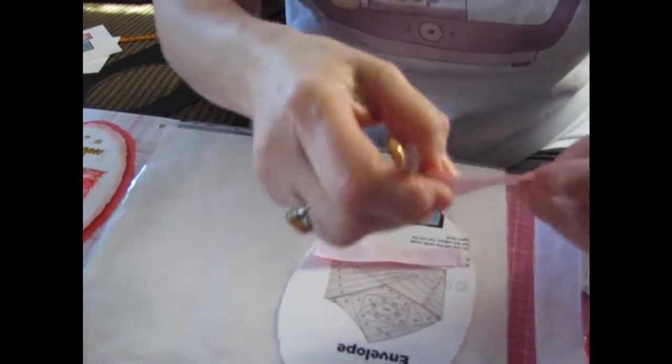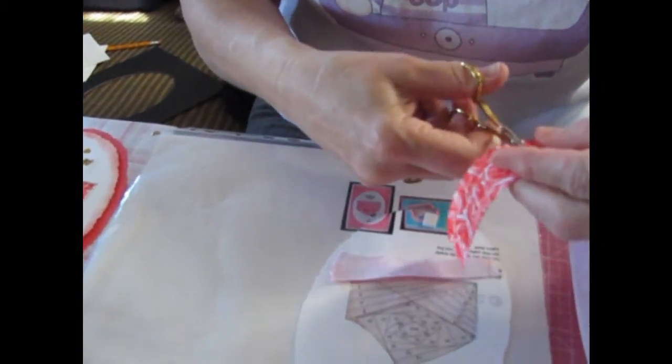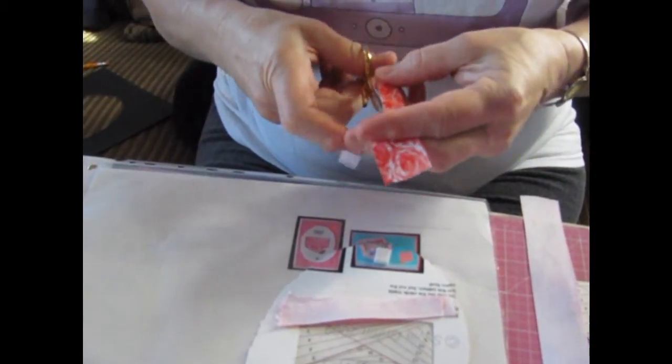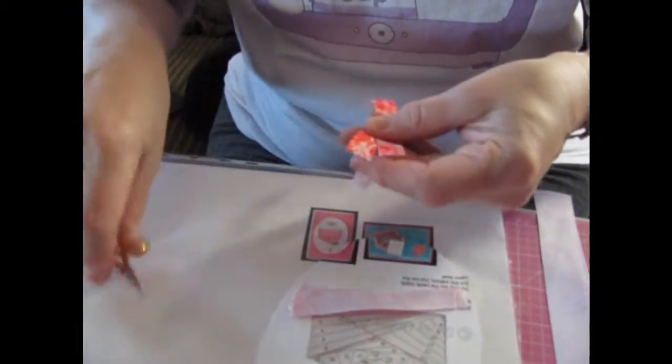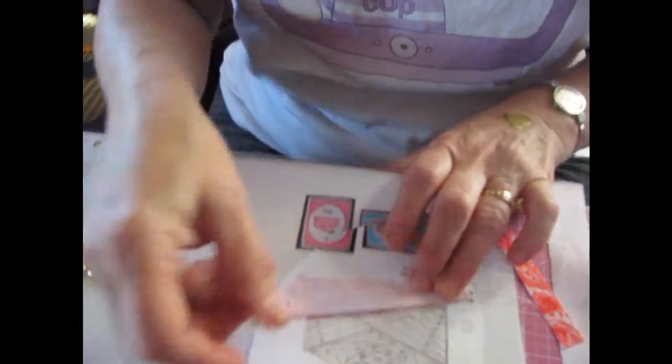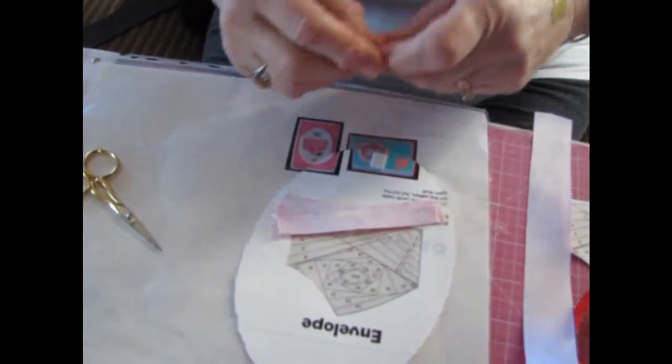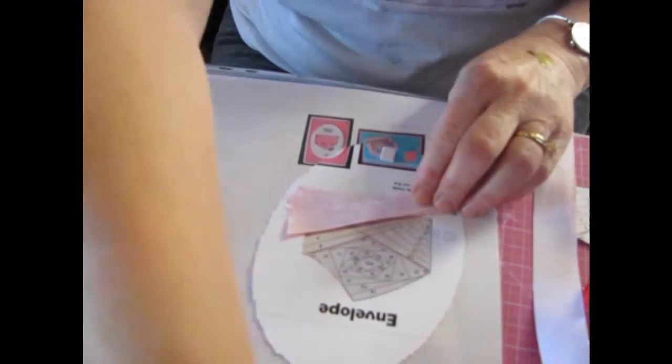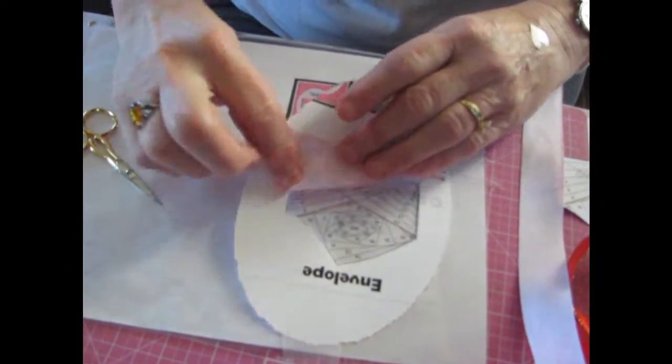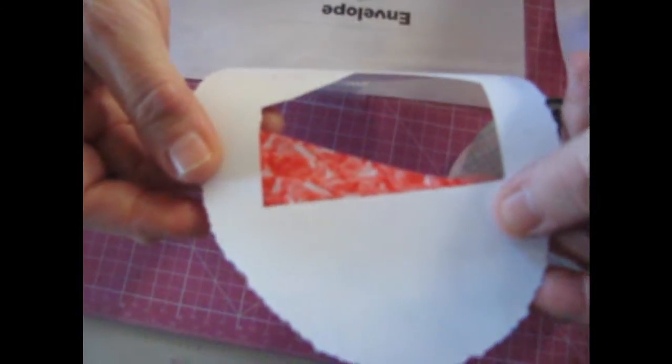And you continue to cut your ribbon. Line it up with your numbers. You will see that you will have numbers from one through the end. And as you can see, this is what it looks like on your front.